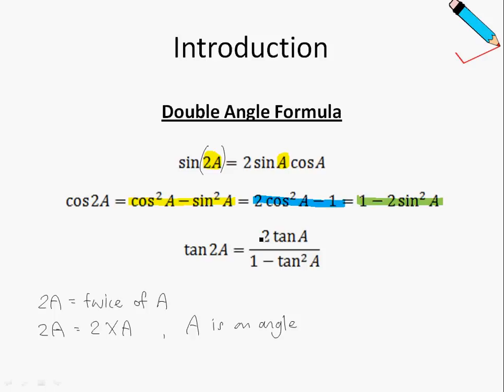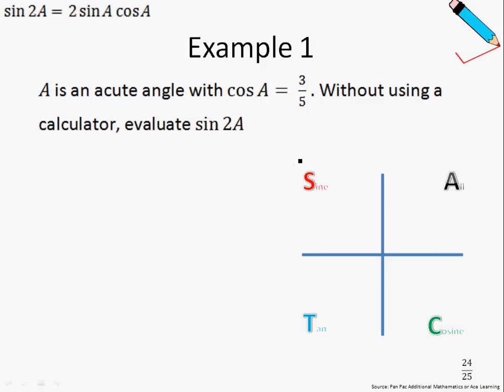Finally, the tangent of 2A is given as 2 tan A divided by 1 minus tangent squared A. Why is it called the double angle formula? Because we will be learning how to break down double angles or twice of the angles, like for example 2A, into the singular form, which is just A. Let's move on to look at some tangible examples.